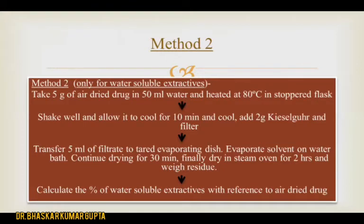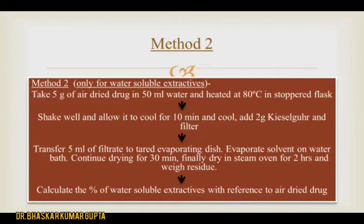The second method is only for water soluble extractive. Take 5 grams of air-dried drug in 50 ml of water and heat it at 80 degrees Celsius in a stoppered flask. Shake well, allow to cool for 10 minutes. Then add 2 grams of Kieselguhr and filter. Transfer 5 ml of filtrate to a tared evaporating dish, evaporate solvent on water bath, continue drying for 30 minutes, then dry in a steam oven for 2 hours and weigh the residue. Calculate the percentage of water soluble extractive with reference to air-dried drug.